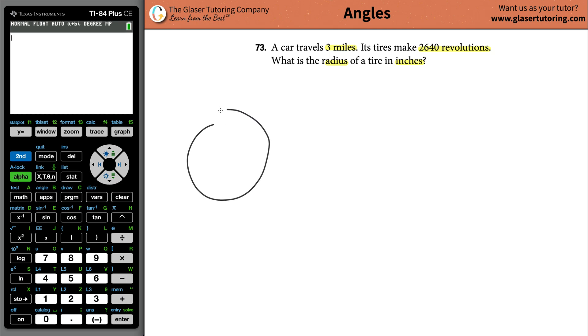All right, so let's take a look at a particular tire, and it has an unknown radius. We also know that this particular car with this size of a tire will travel a total distance of three miles. This will represent three miles. Obviously, this is not to scale.